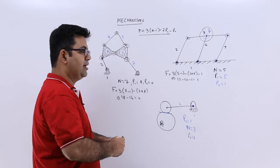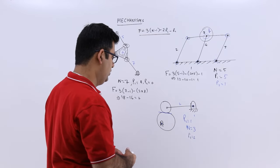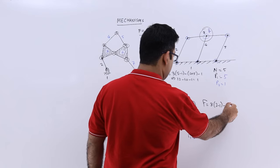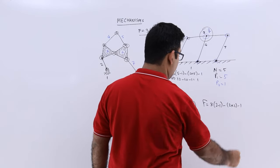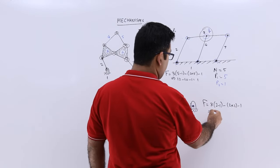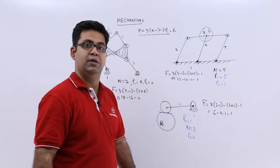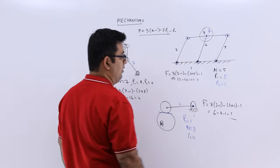Alright, so let us calculate the degrees of freedom for this. So degrees of freedom would be 3(3-1) minus 2(2) minus 1. So you will get 6 minus 4 minus 1, which equals 1. So the degree of freedom for this is 1.